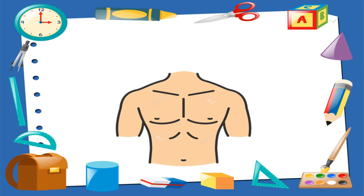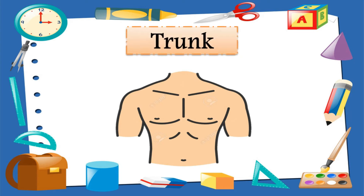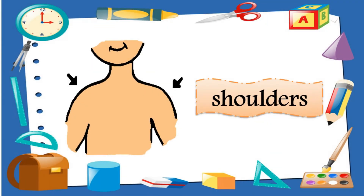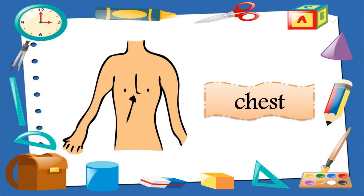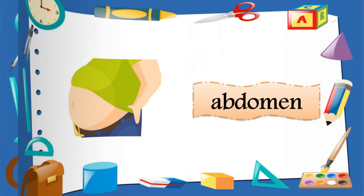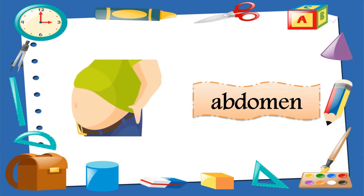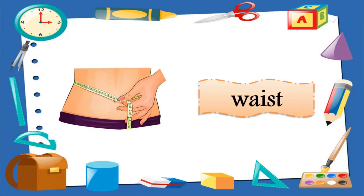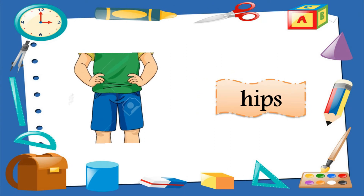The second main part of the body is the trunk. Here are the different body parts that are under the trunk: shoulders, chest, abdomen, waist, and hips.